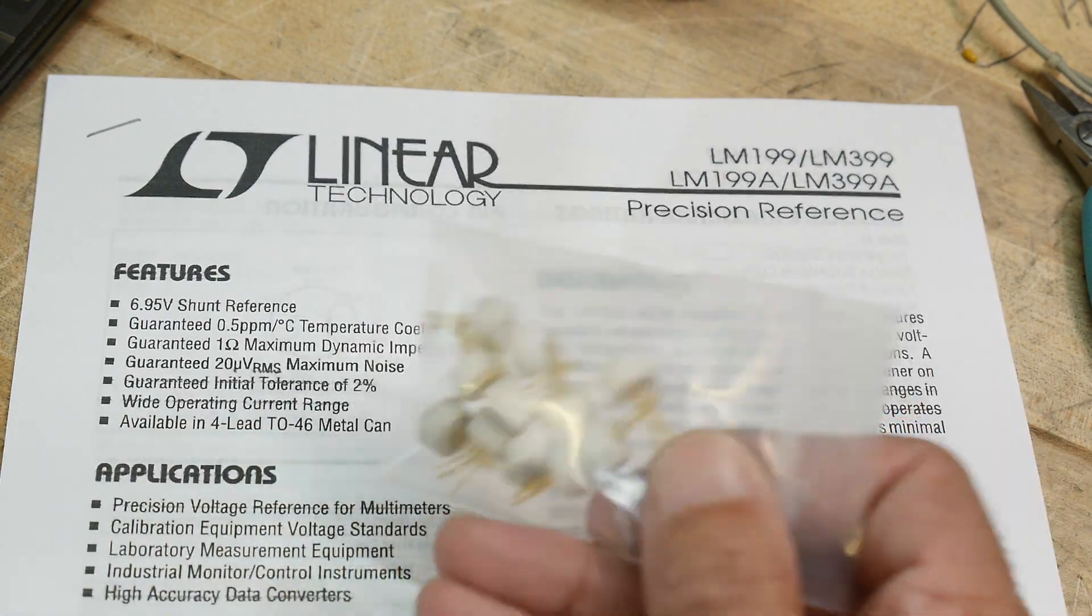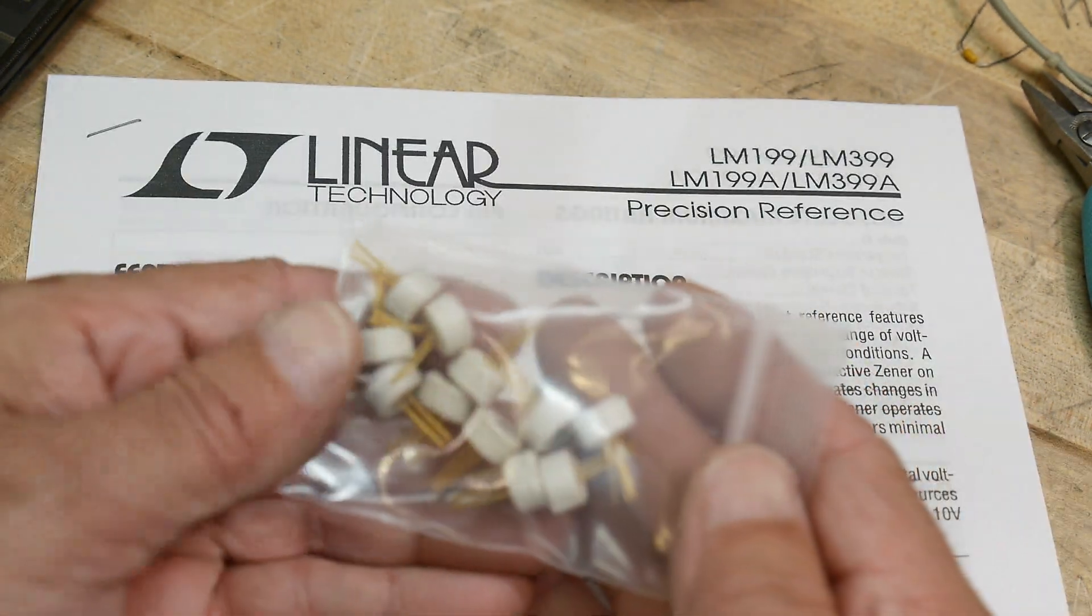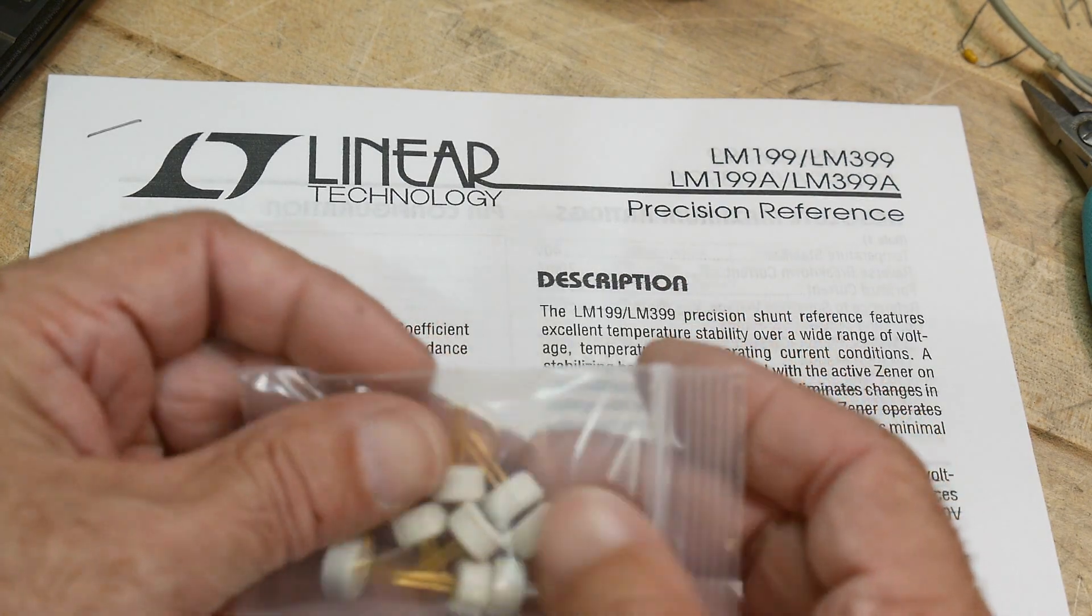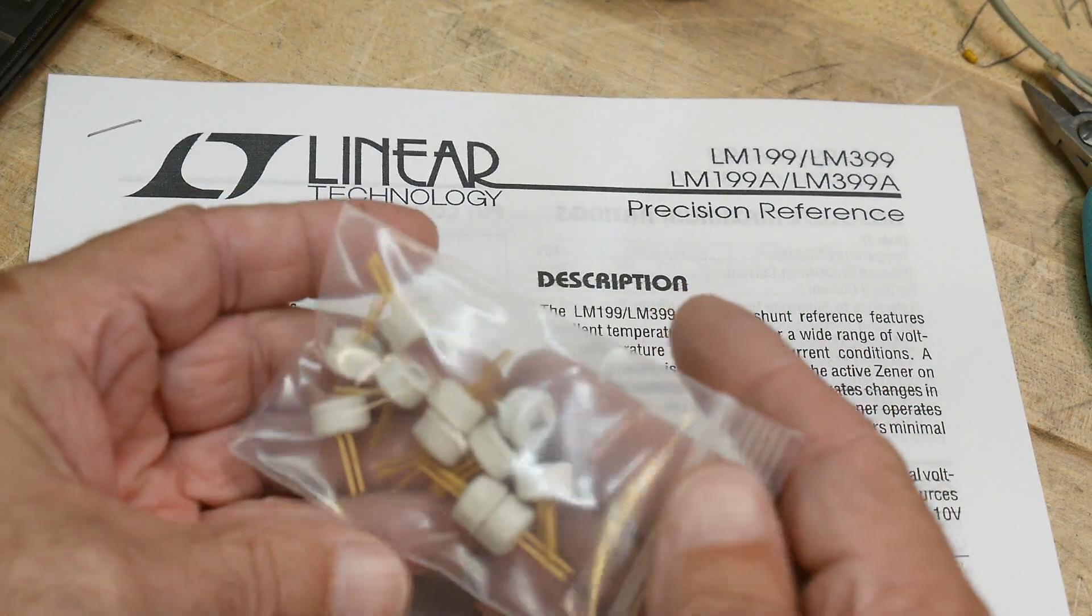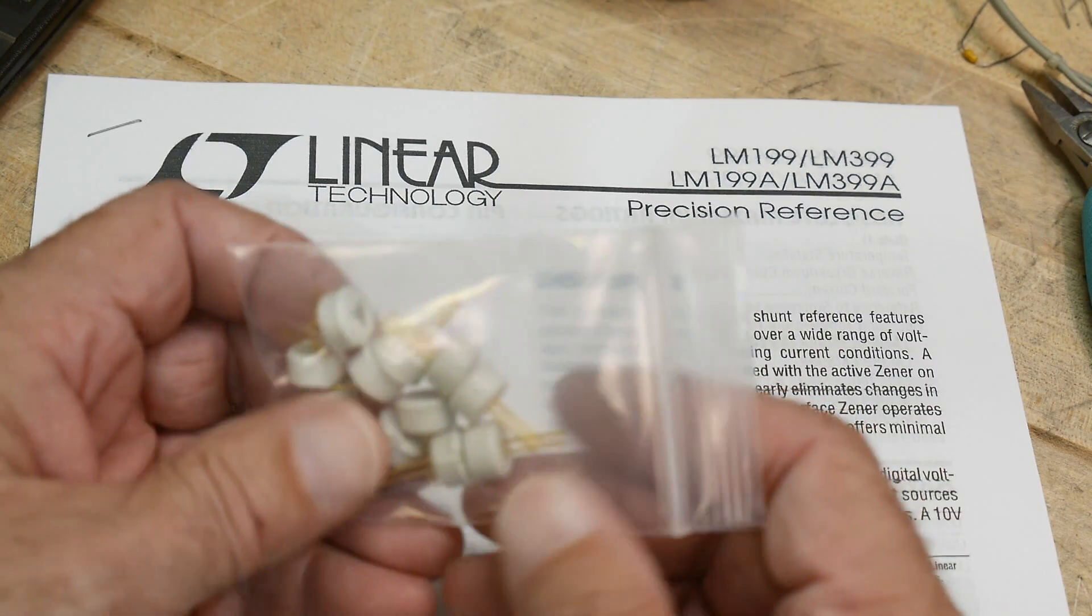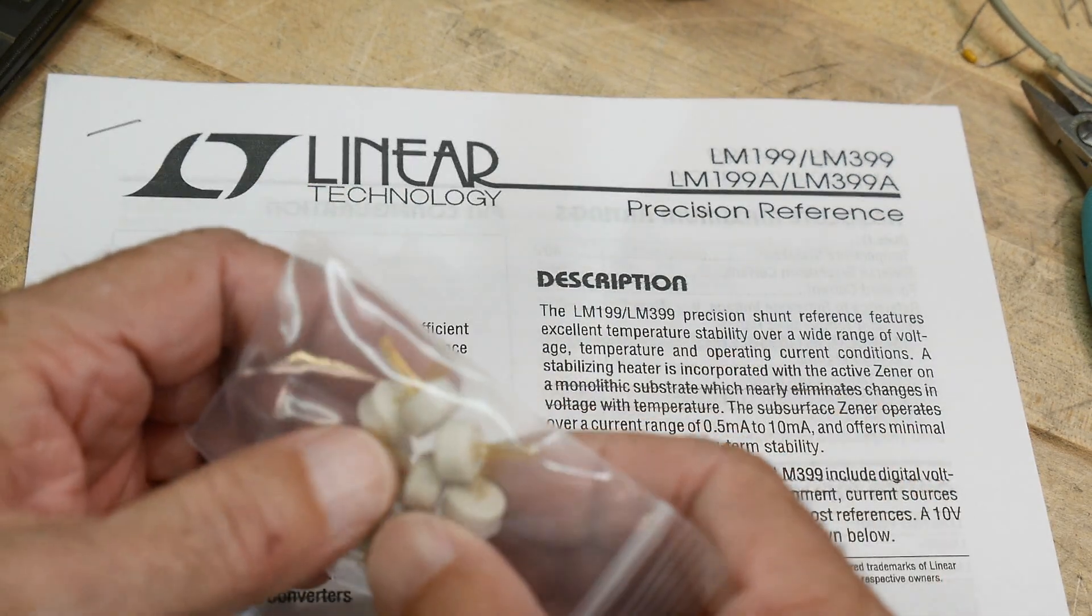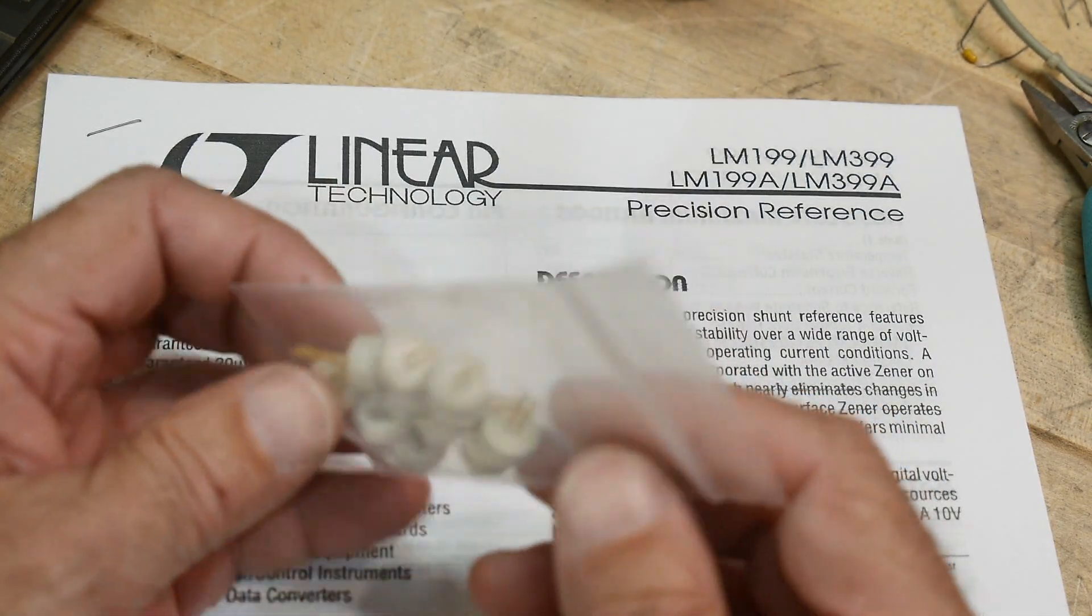I inherited a bunch of these, so I'm able to actually take one apart. I've always wanted to see inside. I always assumed it was something like a TO-5 can and then some stuff inside.